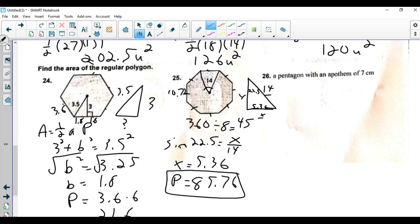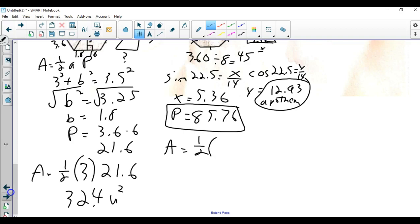Now, that's one key piece of information right there. Now, you need to find the apothem. So, I'm going to do cosine of 22.5 equals y over 14. Again, I'm just going to do 14 times cosine of 22.5. Which gives me an apothem of 12.93. Remember, that's my apothem. Another key piece of information. Now, I have everything I need to find the area. One half the apothem times the perimeter. And that gives me a grand total of 554.44 units squared.